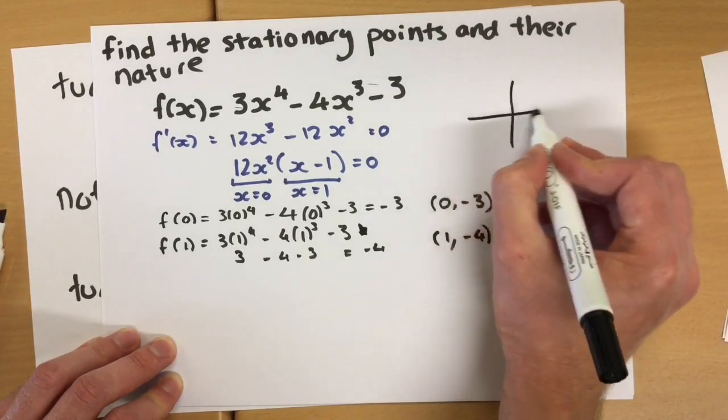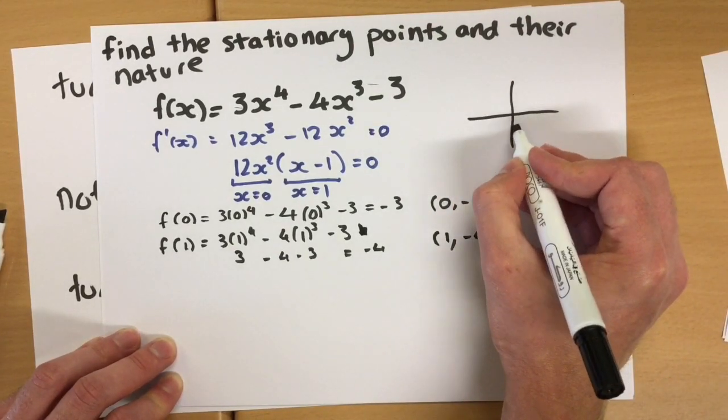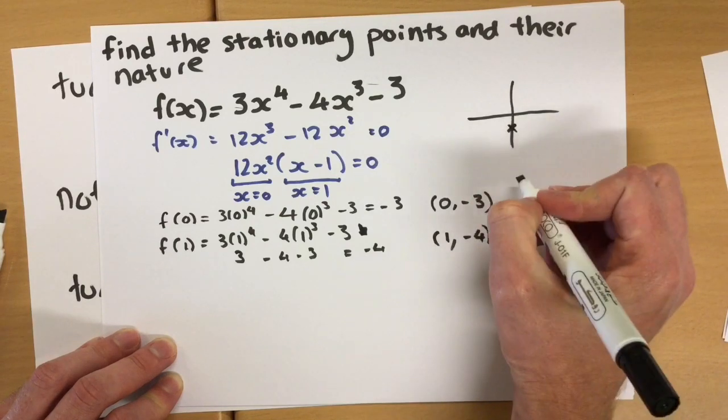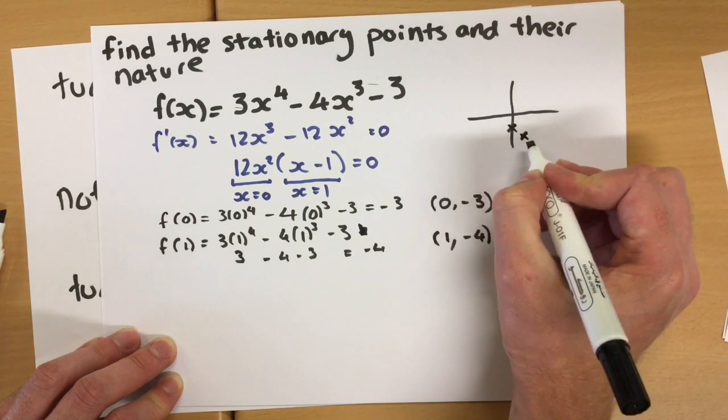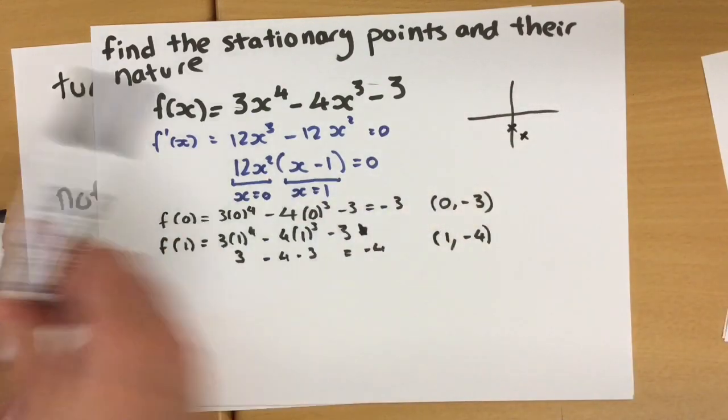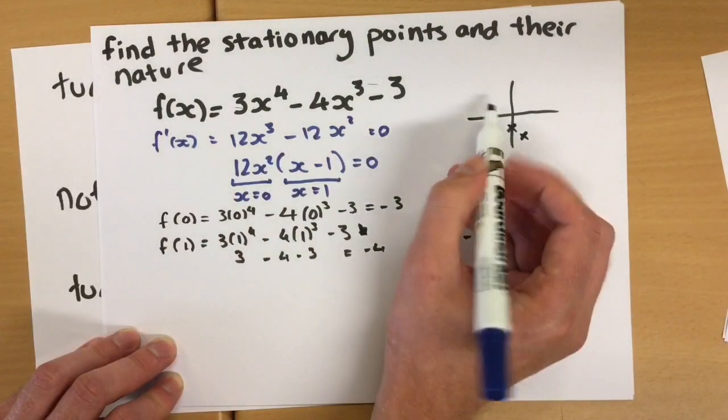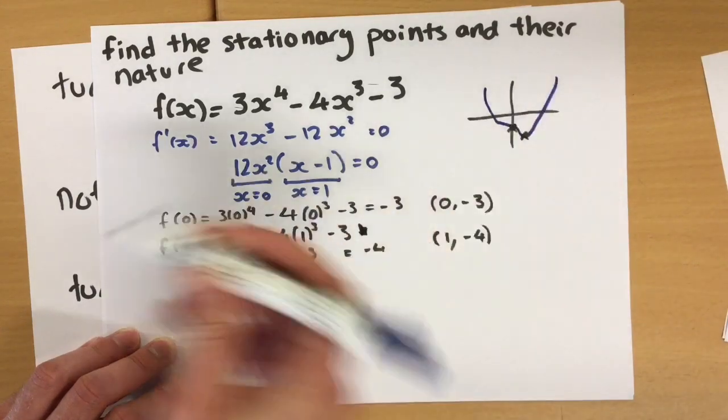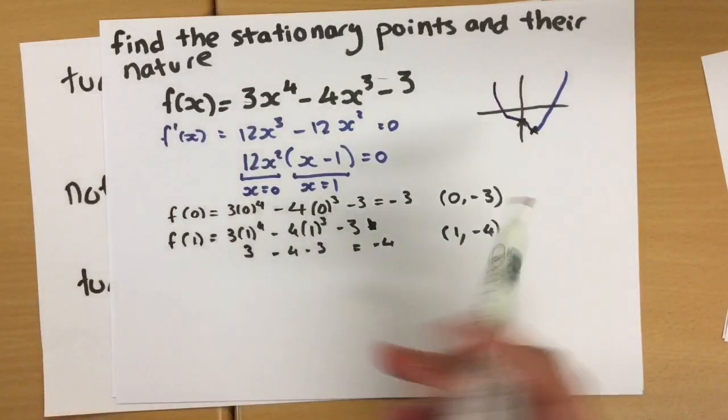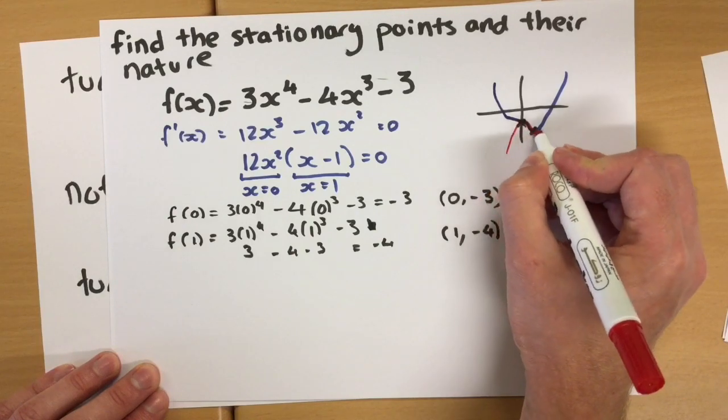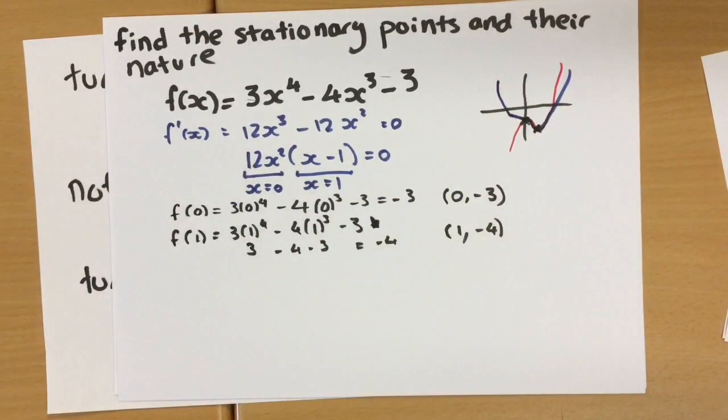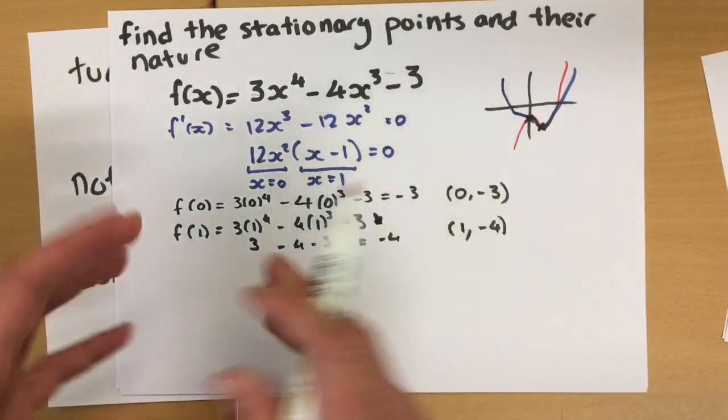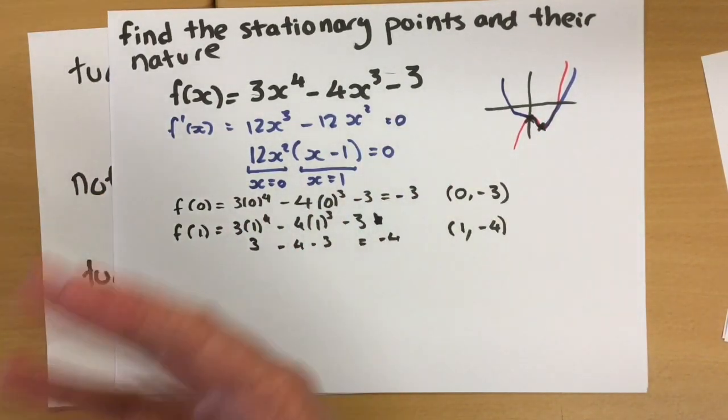So on the graph, we would have zero negative three and one negative four. What we don't know is whether our graph is going to go and do this, maybe, or whether it's going to do something like this, or other ideas. So we don't know yet what's happening around these points. Are they maximums, minimums, points of inflection.